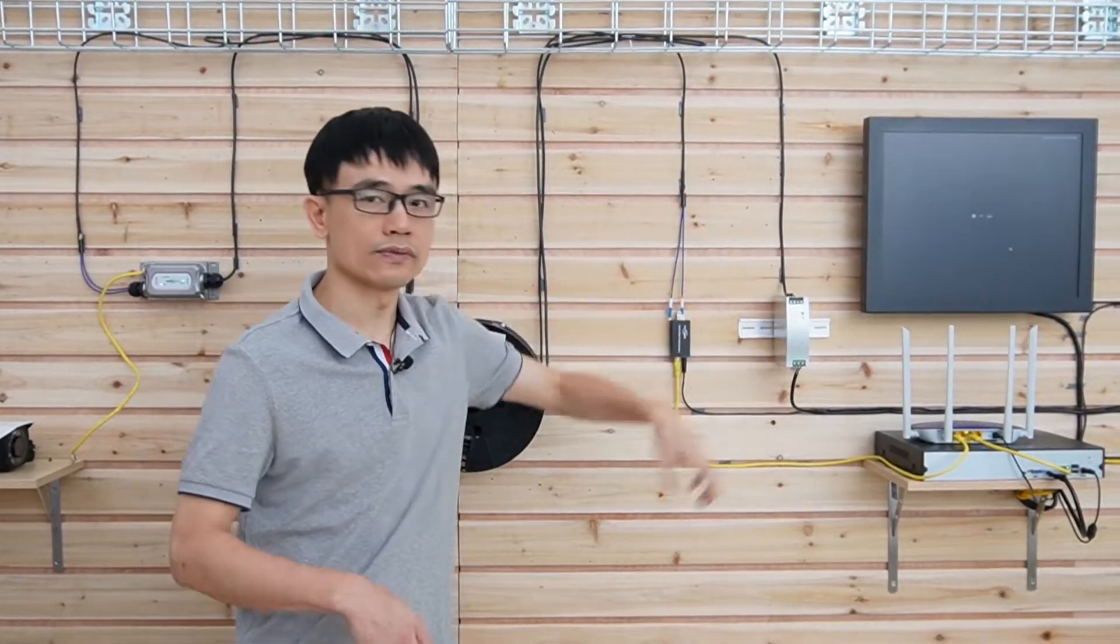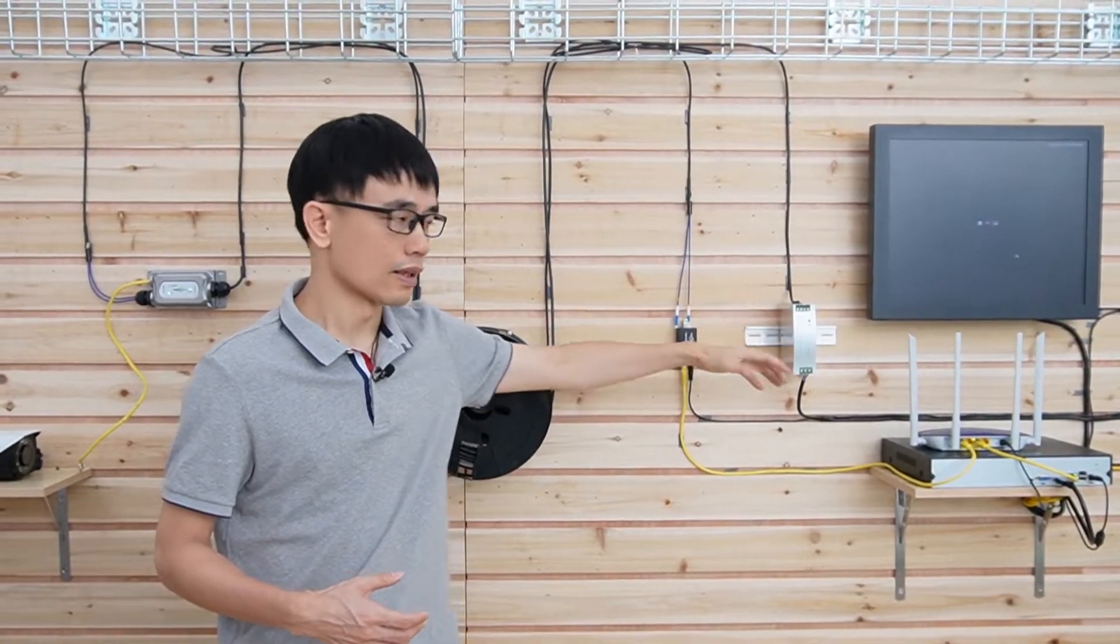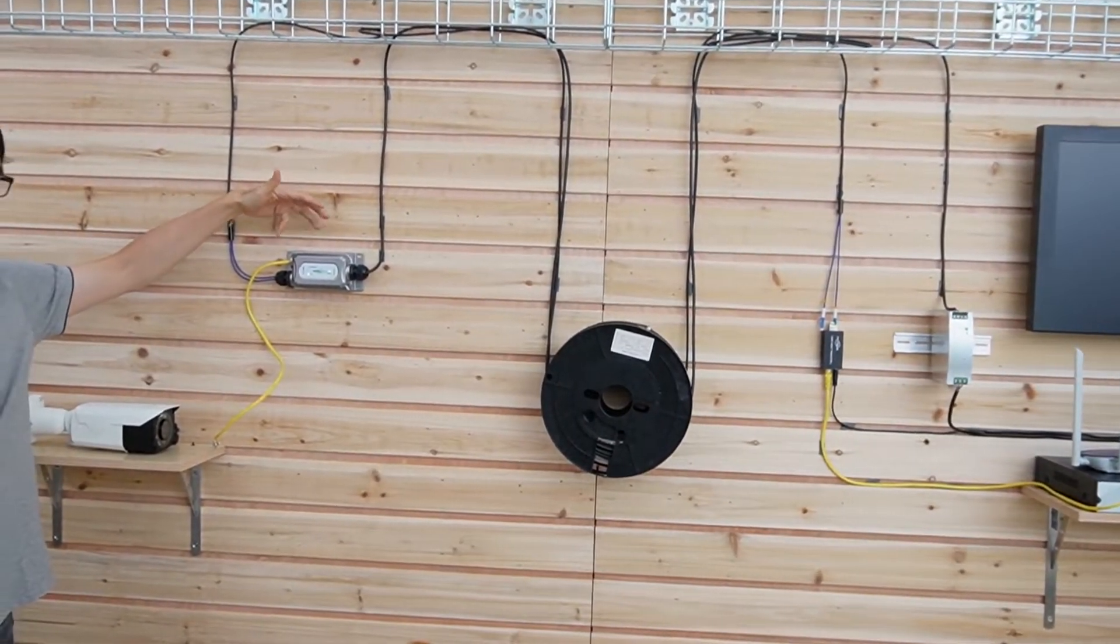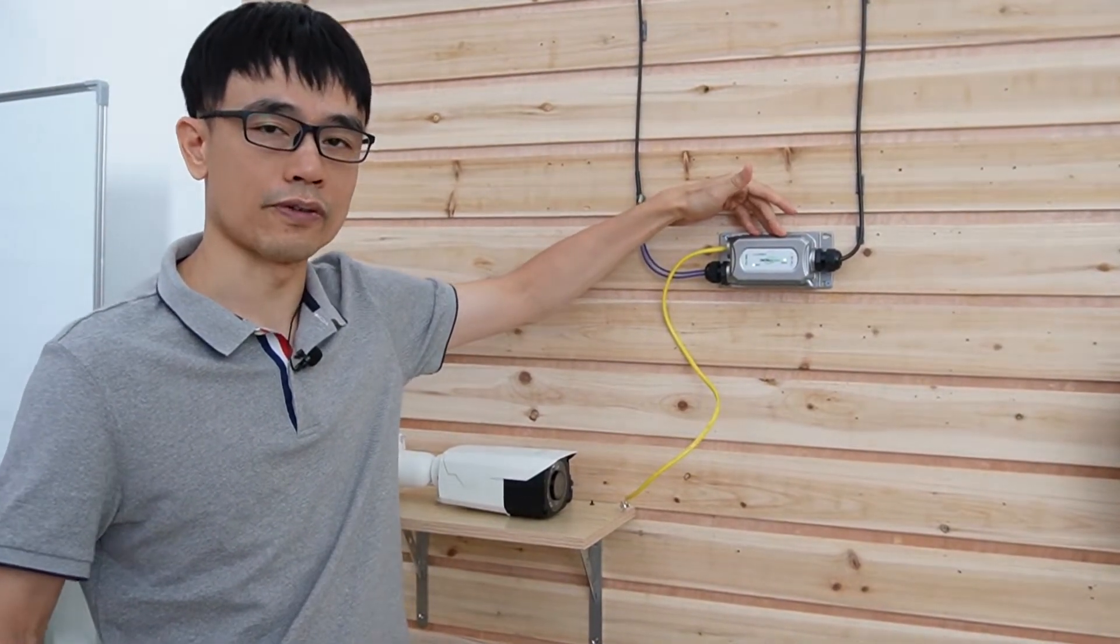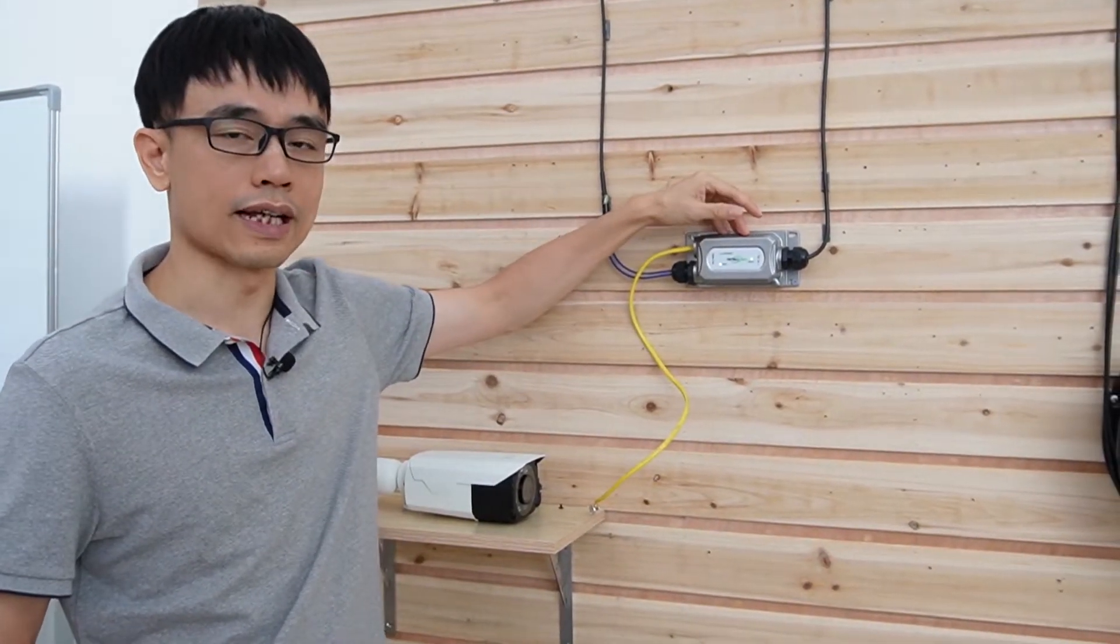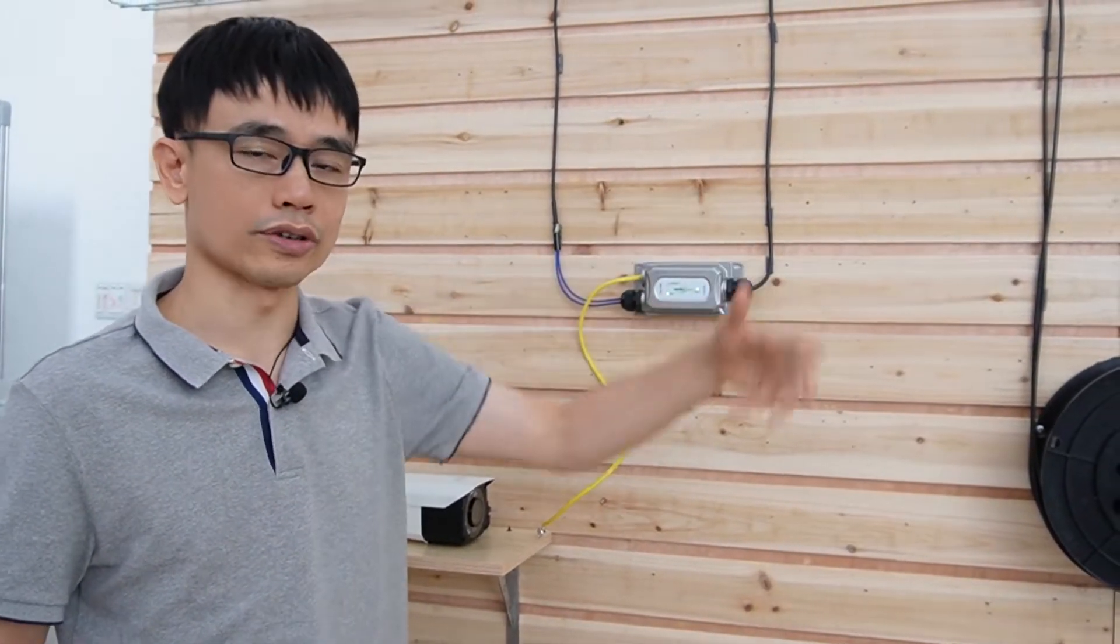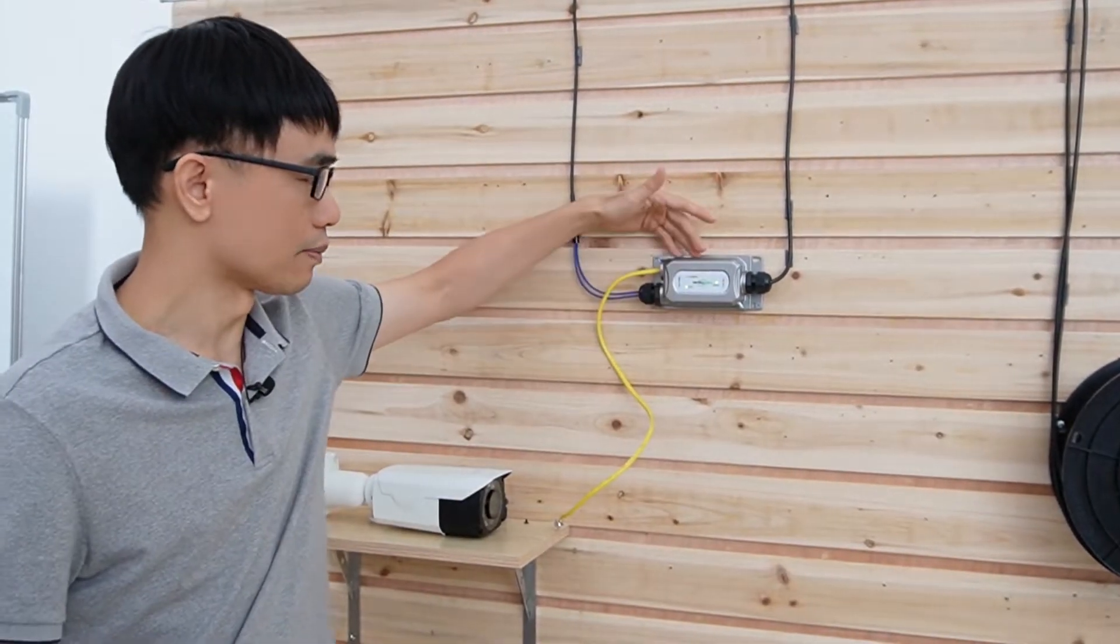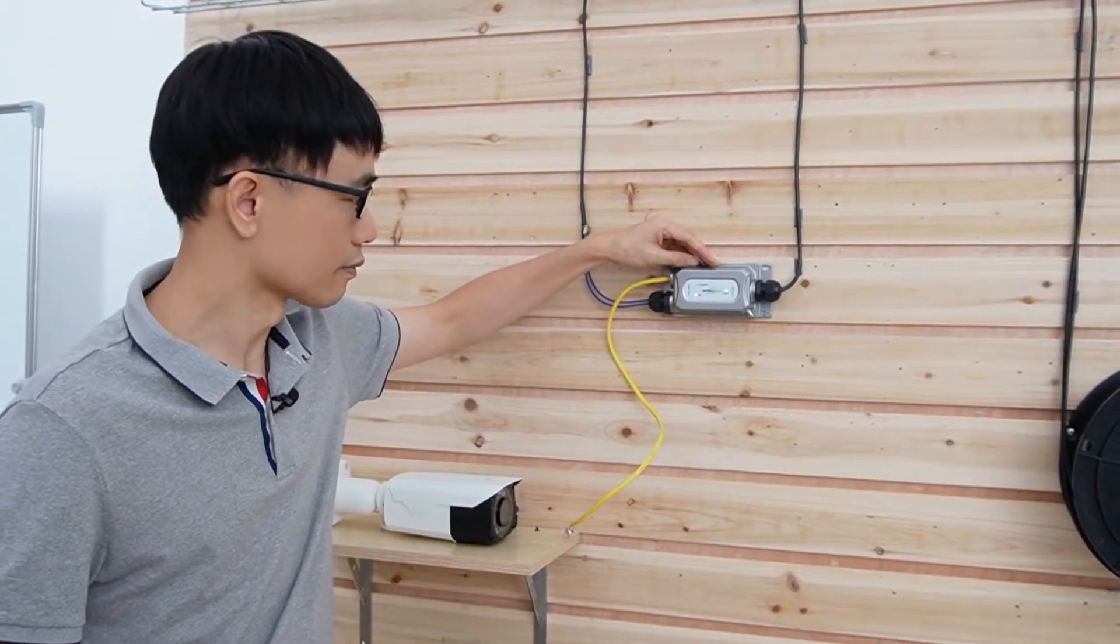So here we use the DC 48, the standard PoE power. And for this medial converter, it has one power regulator built in. It can accept the DC 24 to DC 55. It will convert to the standard PoE. So in this solution, even there's power loss during the long-run power code, we still can power up this medial converter because it has built in the voltage regulator.